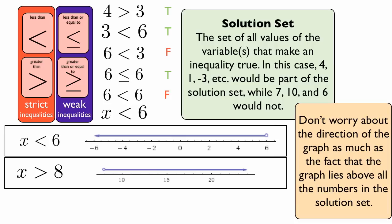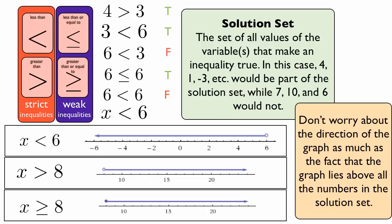Eight is not greater than eight. Six is not less than six. But if we have the example x is greater than or equal to eight, then we draw a filled-in circle because the line goes over eight. We want the line to go over the eight. Eight is indeed greater or equal to eight because it's equal to eight, and so that's what that graph will look like.